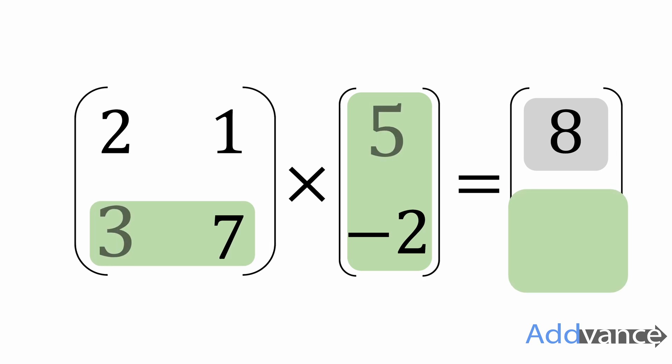Now I'm going to do 3 times 5 plus 7 times minus 2. I want to work that out. 3 times 5 plus 7 times minus 2, I get 1. And I've multiplied this matrix by this vector to get 8, 1.